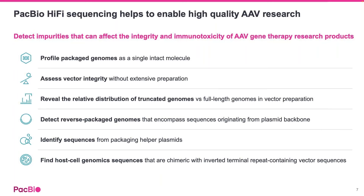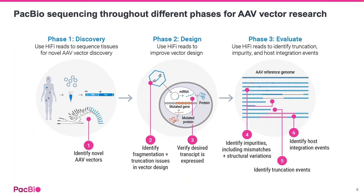PacBio HiFi sequencing enables your AAV vector research by allowing you to profile packaged genomes as single intact molecules, assess vector integrity without extensive preparation, reveal the relative distribution of truncated versus full-length genomes, detect reverse-packaged genomes encompassing sequences from the plasmid backbone, identify sequences from packaging helper plasmids, and find host cell genomic sequences that are chimeric with ITR-containing vector sequences.